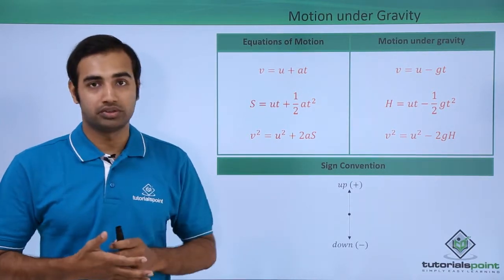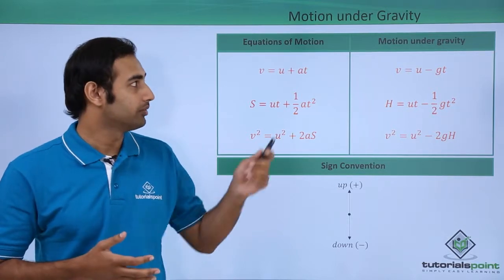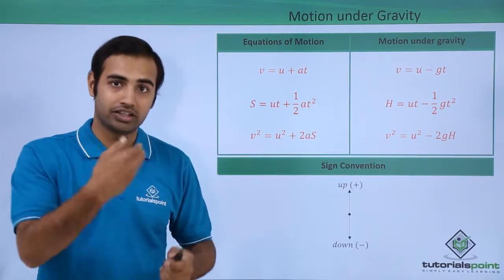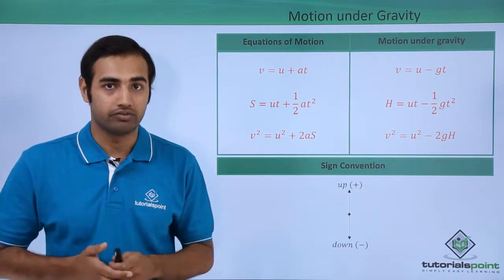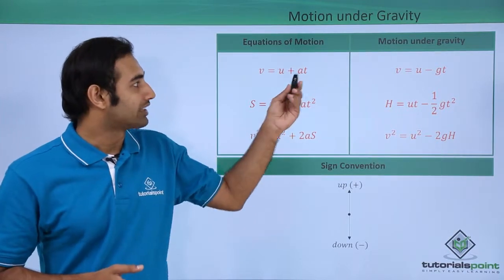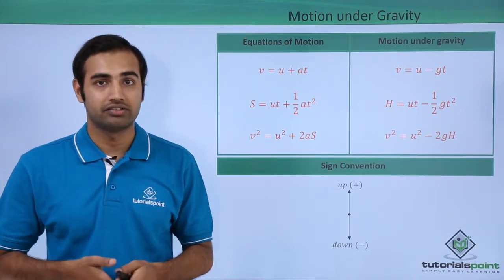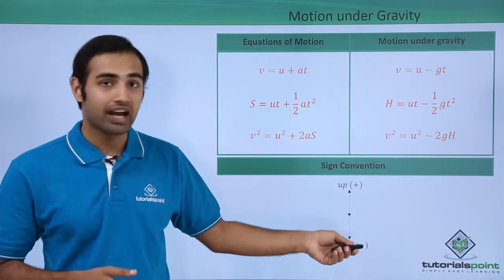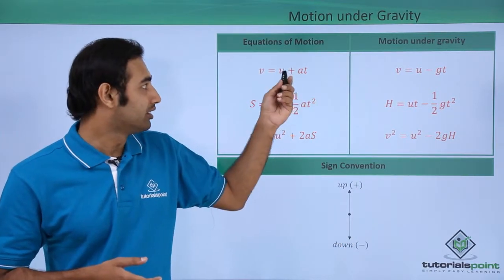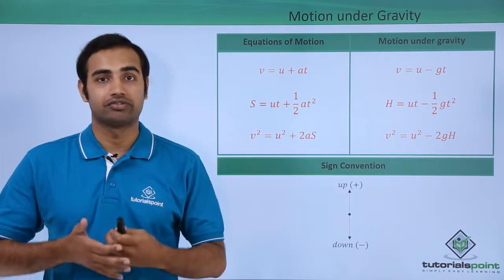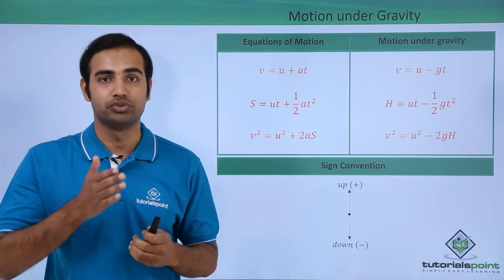So if that is the case, my original equations of motion are mentioned in the first column. In the second column are the transformed versions when I apply it for the situation of gravity. The acceleration becomes the gravitational acceleration, which is g, and g clearly acts downwards. So I replace a with minus g, and my first equation becomes v is equal to u minus gt.